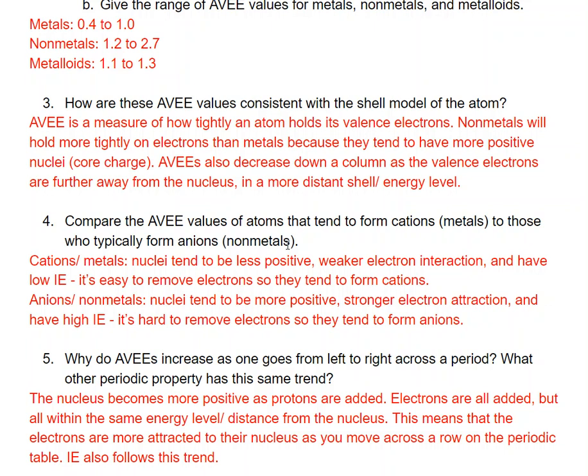Comparing AVEE values of atoms that tend to form cations (metals) versus anions (nonmetals): cations and metals have less positive nuclei, weaker electron attraction, and low ionization energy, making it easy to remove electrons so they form cations. Anions and nonmetals tend to have more positive nuclei and stronger electron attraction, with very high ionization energy, making it hard to remove electrons, so they tend to form anions.